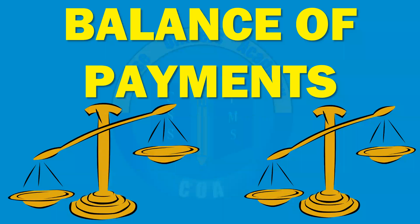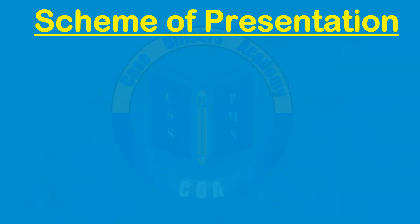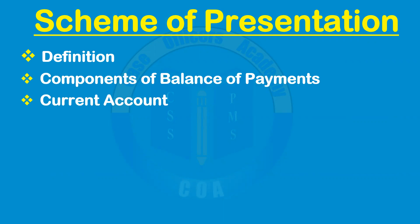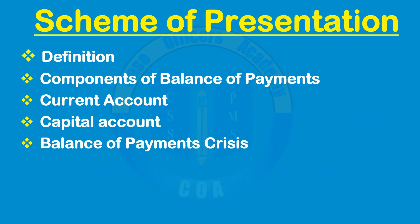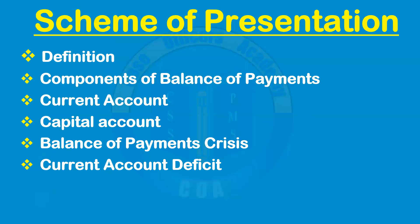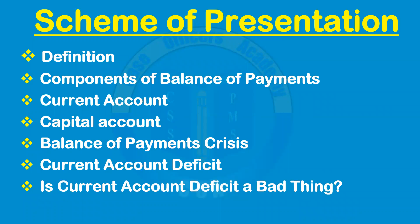Hello guys, welcome to Koi Academy. In this video we'll be talking about a very important concept in economics called Balance of Payments. The structure of this video will cover: first, the definition of Balance of Payments; then its components, which include the current account and capital account; then a specific terminology called Balance of Payments crisis — what it is and when it happens; and finally, current account deficit and whether it is a good or bad thing.